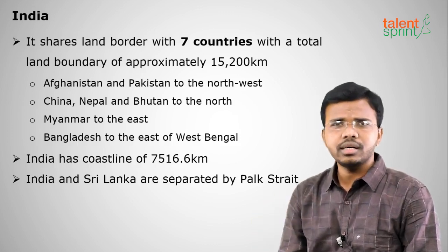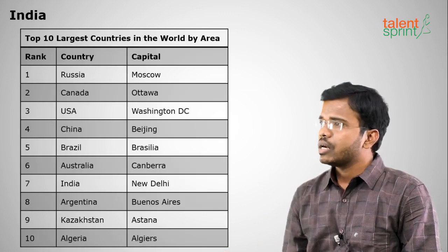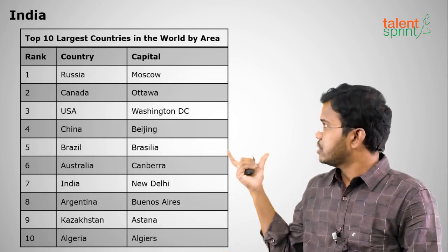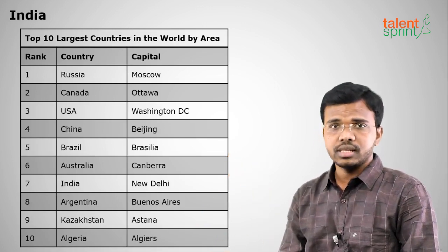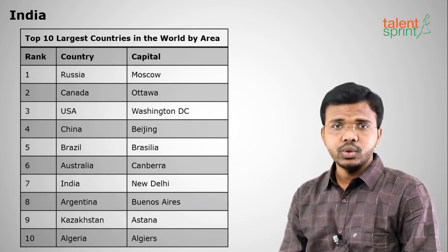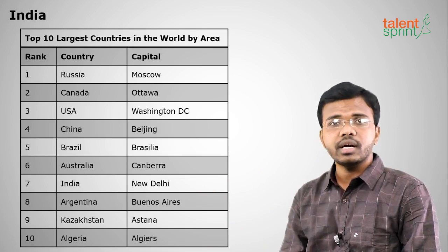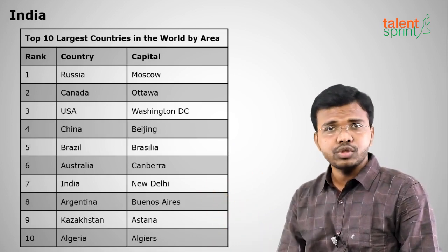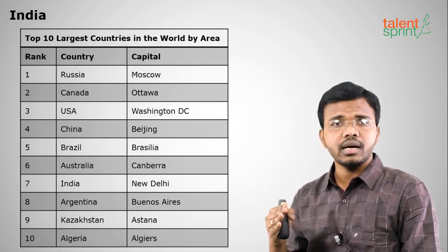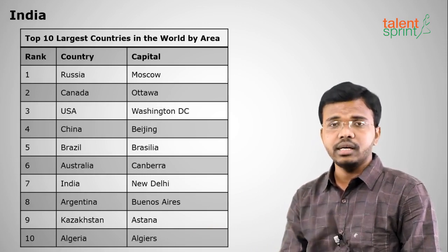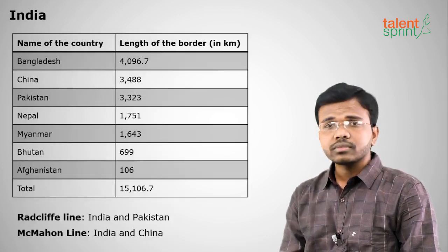The distance between India and Sri Lanka is around 32 kilometers. Moving on to the top 10 largest countries in the world: 1st Russia, 2nd Canada, 3rd USA, 4th China, 5th Brazil, 6th Australia, 7th India, 8th Argentina, 9th Kazakhstan, and 10th Algeria.